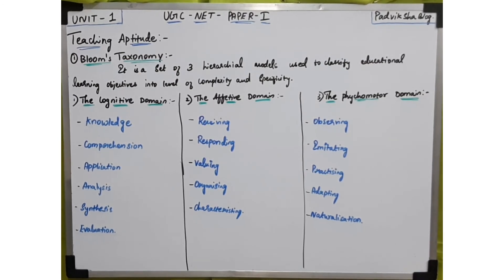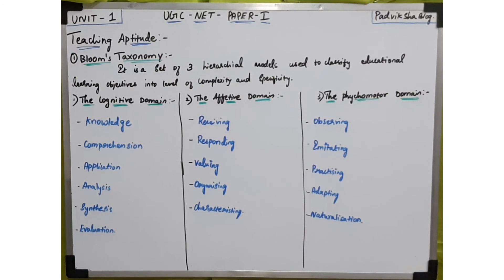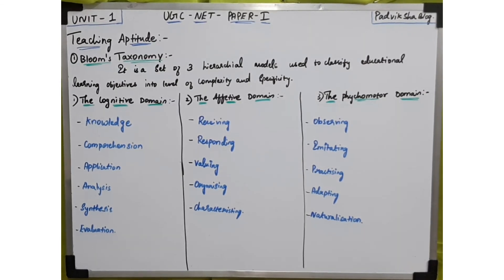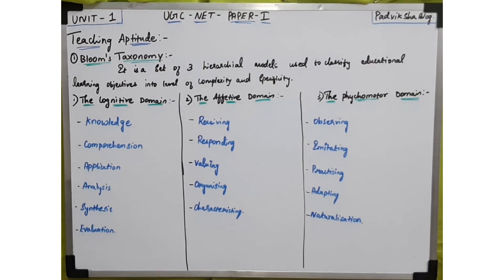So we have discussed Bloom's Taxonomy, a big topic. We have three learning domains: cognitive, affective, and psychomotor. Cognitive is the knowledge-based domain, affective is the emotional and feelings-based domain, and psychomotor is the action-based, physical domain. In the next video, we will discuss the next type of objectives of teaching — the Gagne and Briggs model. Until then, bye.